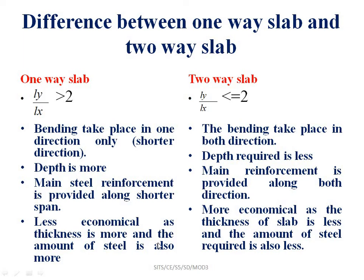The two-way slab is less economical because the thickness of the slab is more and the amount of steel is also more — main reinforcement is provided in both directions. The one-way slab is more economical as the thickness of the slab and the amount of steel are less — main reinforcement is in one (shorter) direction and distribution reinforcement is in the other.